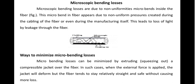Microscopic bending loss occurs during the manufacturing process. Small micro-bends form inside the core, like a wave pattern. You can see this in the diagram. These microscopic bends inside the core cause significant signal loss and are called microscopic bending loss.